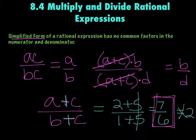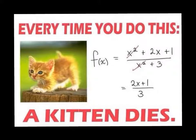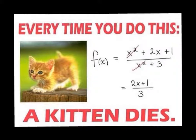Do not cross out through addition or subtraction, only multiplication. Entire groups are okay to cancel, but not through the groups, ever. If you do that, you're killing kittens. This has been on my door for a couple weeks — every time you do something like that, a kitten dies. So please, no dead kittens. Do not kill any kittens in my class.